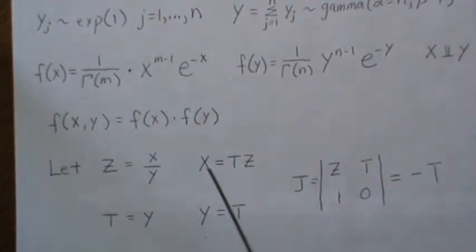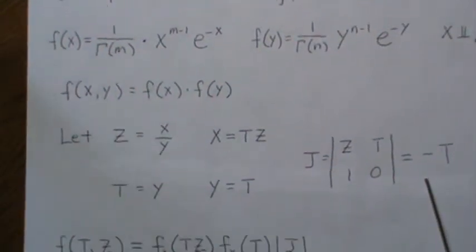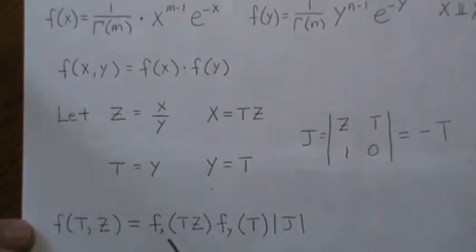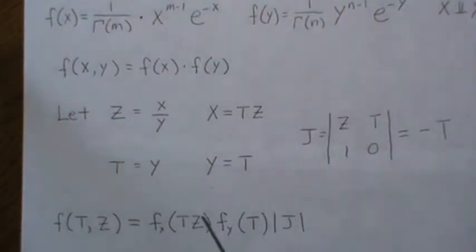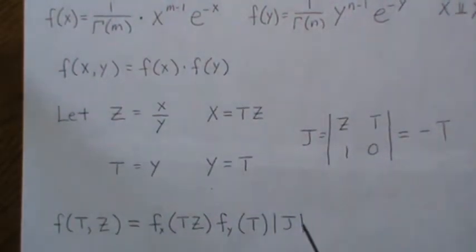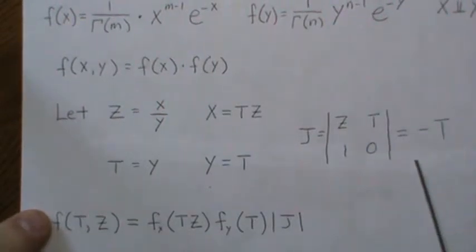So this is the partial of x with respect to t. This is the partial of x with respect to z. And this is y. So we get minus t is the Jacobian. Now in our transformation, it's simply this. f of x, but plug in this x and f of y and plug in that y. And then the absolute value of the Jacobian. So it's just going to end up being t.